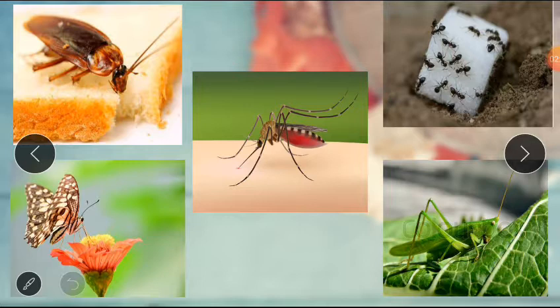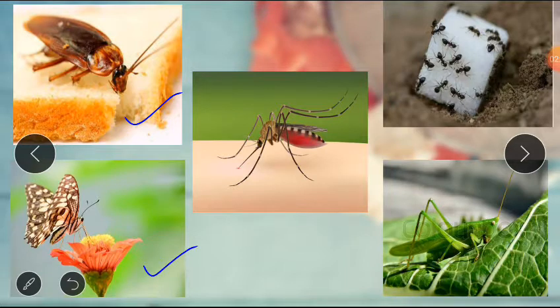The cockroach is eating bread. The butterfly is sucking nectar from flowers. Mosquitoes are sucking blood. The ant is eating sugar, and the grasshopper is eating leaves.